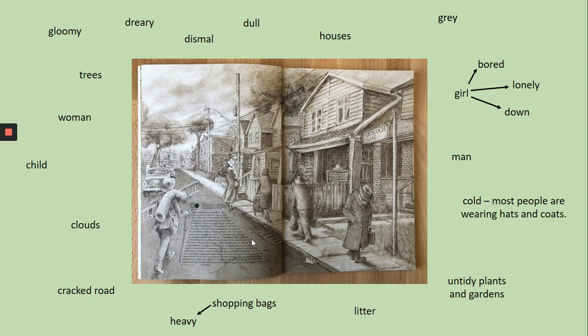I've quickly had a look at this picture and written some things that I can see. I can see trees in the background. There's a woman here holding a child in her arms. We've got clouds because most of the sky looks quite cloudy and a bit grey. There's a big crack in the road, which tells me people don't really look after this place - no one's really taking care of it.